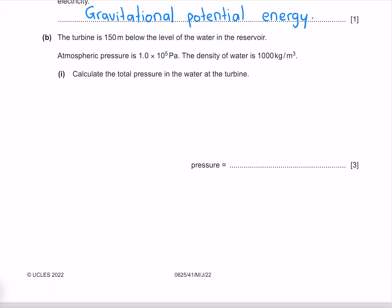The turbine is 150 meters below the level of the water in the reservoir. Atmospheric pressure is 1 times 10 to the power of 5 pascals. The density of water is 1000 kilograms per meter cubed. Calculate the total pressure in the water at the turbine.